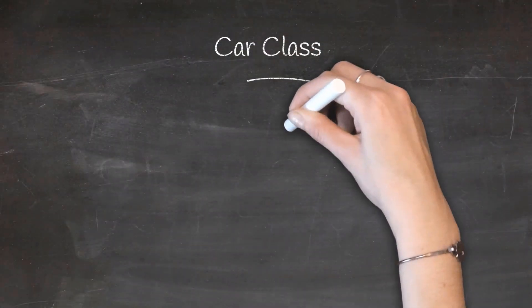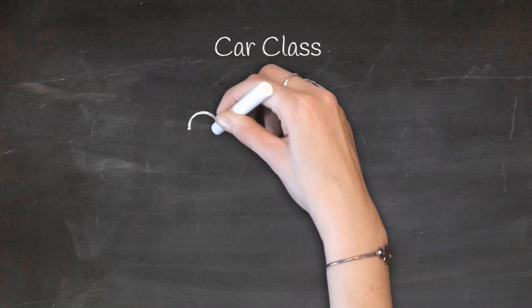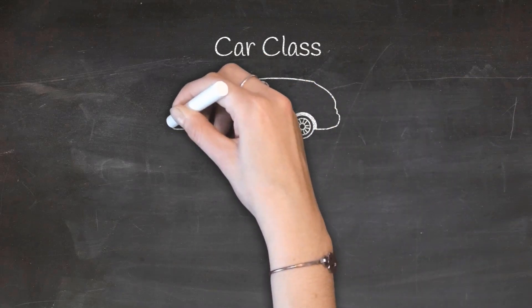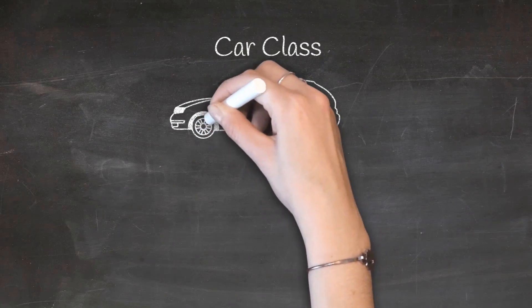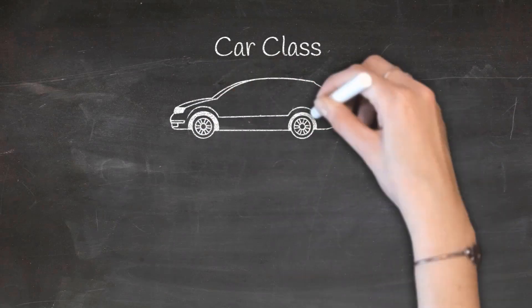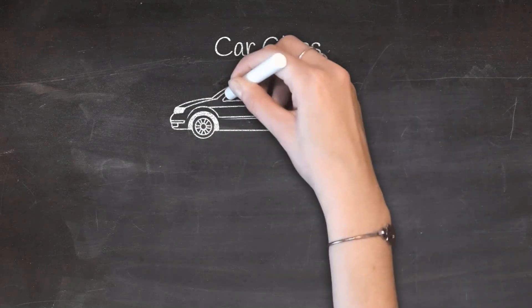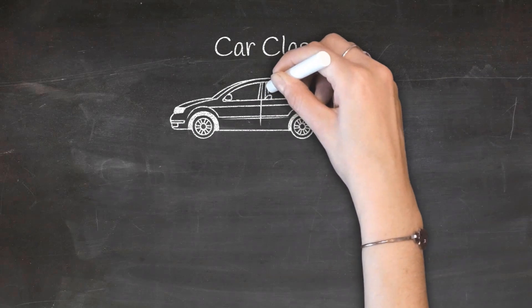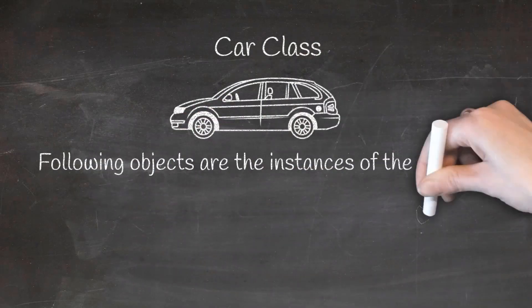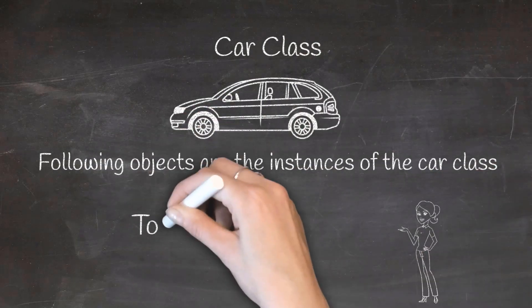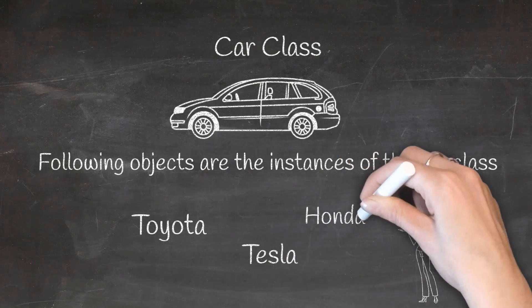For example, when we hear the word 'car,' we immediately think about a box-like transportation machine with certain properties in an abstract form. The car class defines the fields and methods that will exist in all objects that are an instance of the car class — for example, a Toyota, a Tesla, or a Honda.